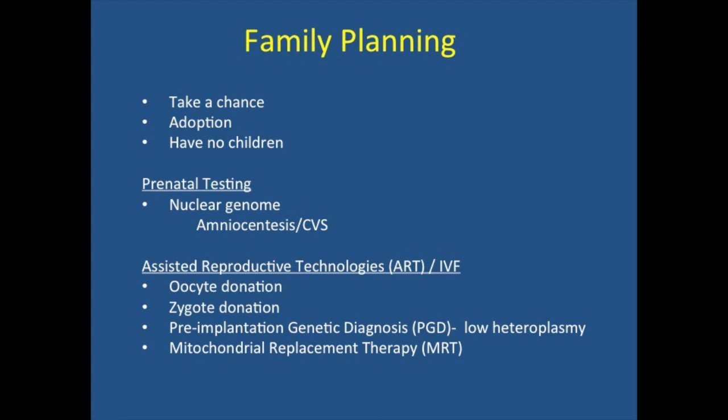The nuclear testing or prenatal testing available clinically is not really appropriate for the mitochondrial genome in most cases. There are assisted reproductive technologies such as oocyte donation, zygote donation — there are lots of fertilized eggs sitting in freezers around the country, and oftentimes families will donate those. There's also pre-implantation genetic diagnosis for low heteroplasmy levels, though that's not done so much in the United States. And then there's mitochondrial replacement therapy.